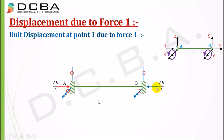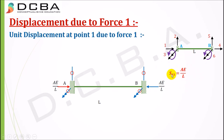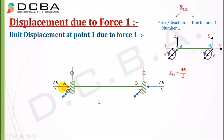The reaction at the other end is AE/L in the opposite direction. All other reactions — moments and vertical forces — are zero, because only a horizontal axial force is applied, producing only a horizontal reaction. Now S11 is force or reaction at number 1 due to force 1. Since both force and reaction at number 1 coincide, S11 = AE/L.